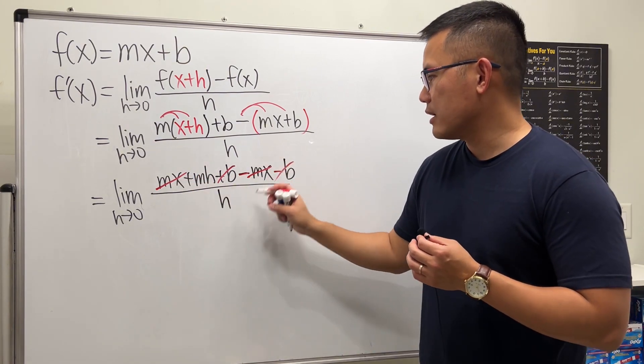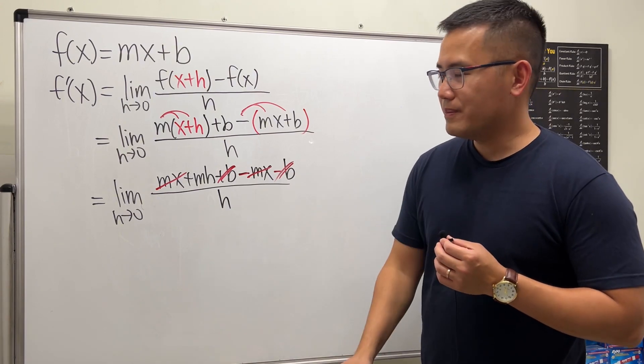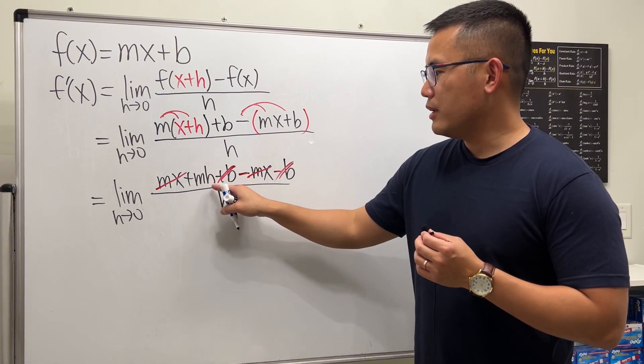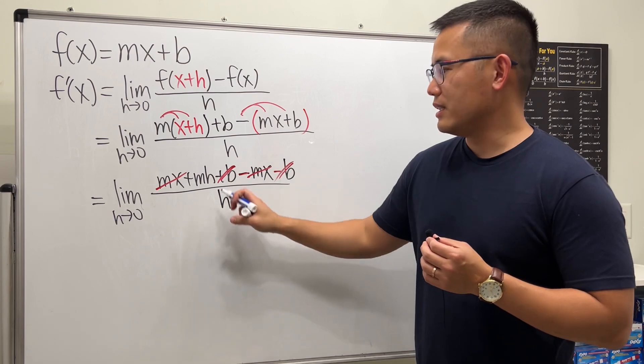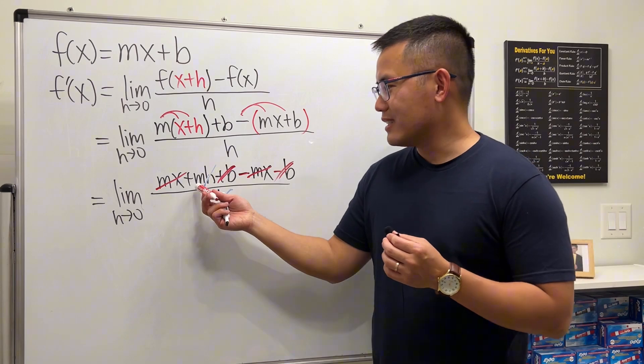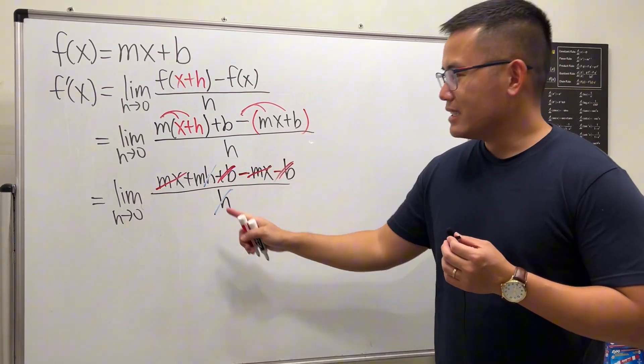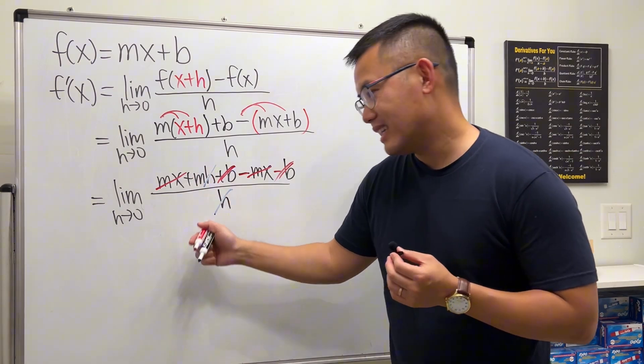So again, mx and mx cancelled, this b and that minus b cancelled. Right now, this is just m times h divided by h. So we can cancel out this h and that h. And in fact, the final answer is just m because there's no other variable. So the answer is just this m right here.